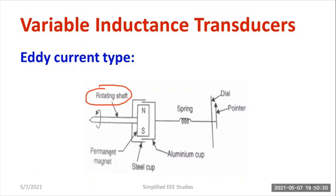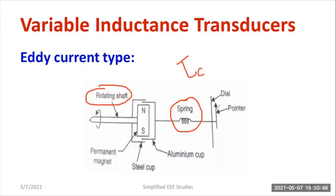One of the major applications is in the automobile for a speedometer. There is a rotating shaft, and here you can see a permanent magnet with north and south pole. As the shaft rotates, the permanent magnet also rotates because it is coupled. You can also see a steel cup and an aluminum cup — two strips placed there. One end of the aluminum cup is connected to the dial through a spring. This spring provides the controlling torque TC, which is directly connected to the dial and pointer where you get the reading.